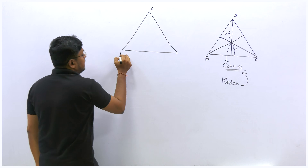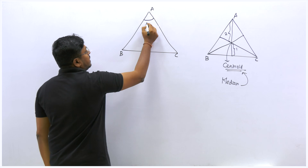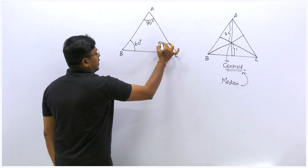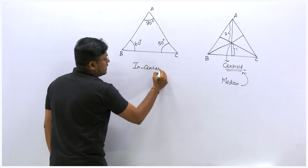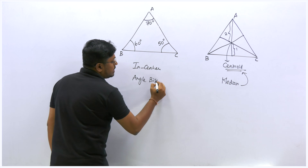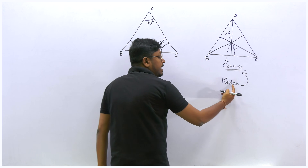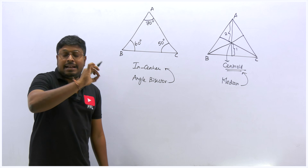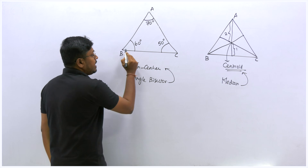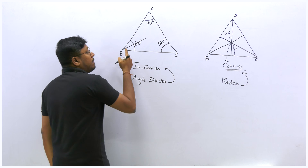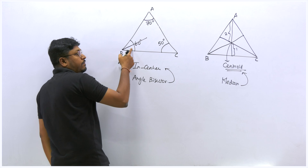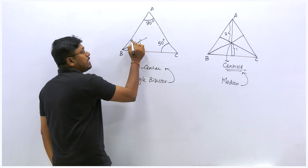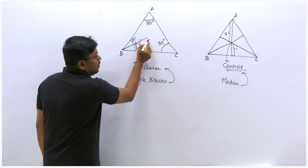Now for the incenter. Take triangle ABC with angles — say 70°, 60°, and 50°. The key word to remember for incenter is angle bisector. If we draw a median we get a centroid; if we draw an angle bisector we get an incenter. An angle bisector is a line from a vertex that cuts the angle into exactly two equal halves. For example, the 60° angle is split into 30° and 30°.